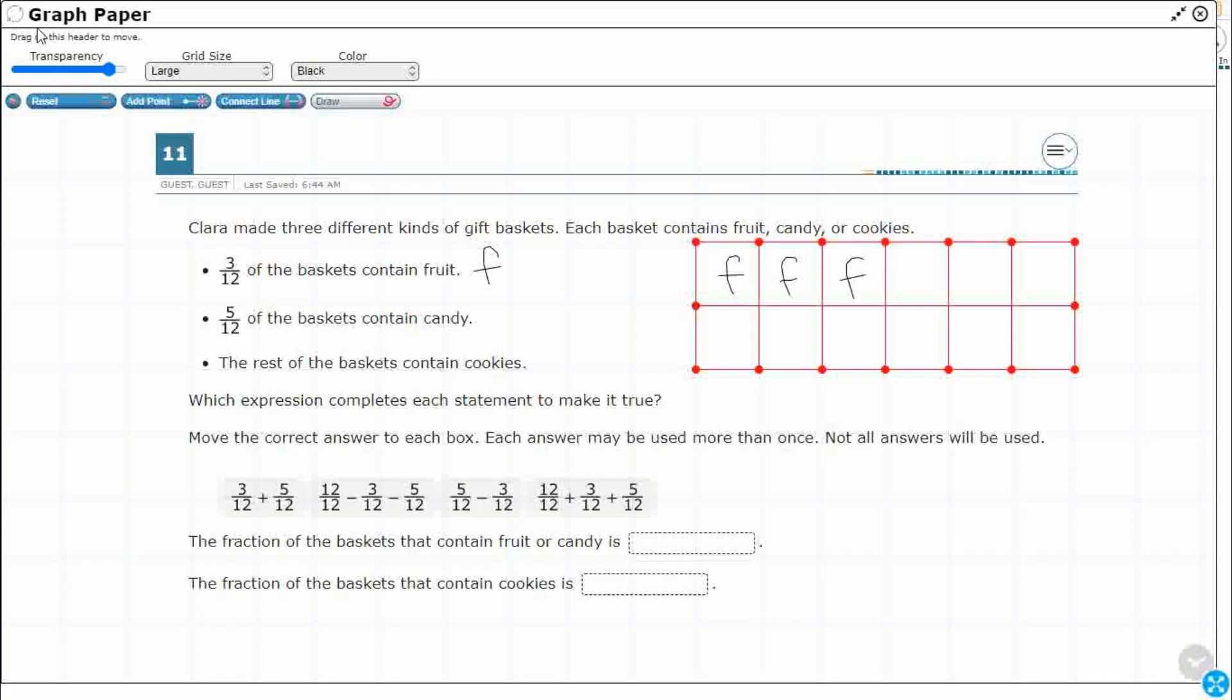Now five 12ths contain candy, so this is out of the same whole. I'm going to use green and do a C for candy. Five 12ths: one, two, three, four, five.